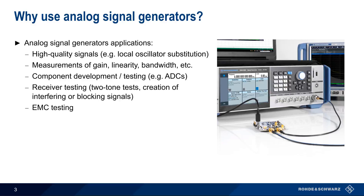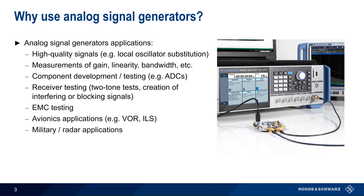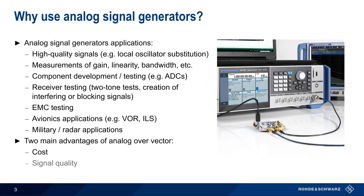For certain special applications, like avionics and military radar applications, analog signal generators are a good, if not the best, solution. Analog signal generators have two additional advantages over vector signal generators: they usually cost less, but more importantly, they provide very high-quality signals. Let's talk about this second point in a bit more detail.